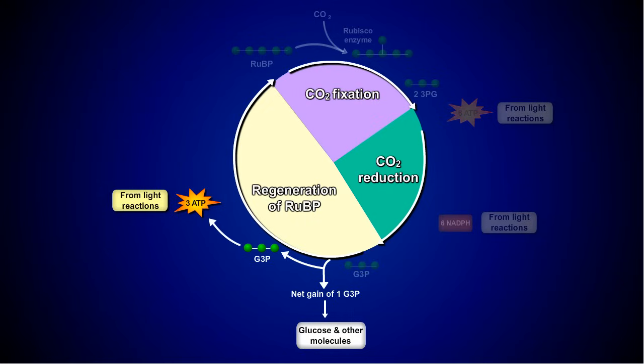In this phase, ATP is used to combine the rest of the G3P molecules to form RuBP molecules. This RuBP can then combine with additional carbon dioxide molecules, continuing the carbon reactions.